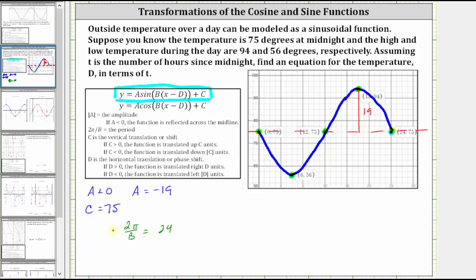To solve for b, we multiply both sides by b. Simplifying, we have two pi is equal to 24b. Solving for b, we divide both sides by 24. Simplifying, we have b equals, 2 24ths is 1 12th, giving us b equals 1 12th pi.